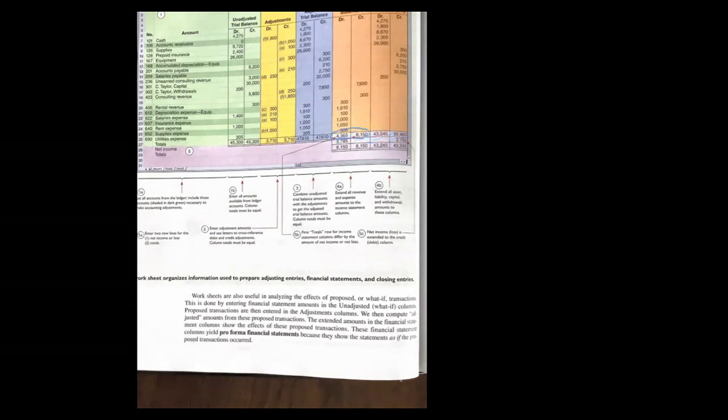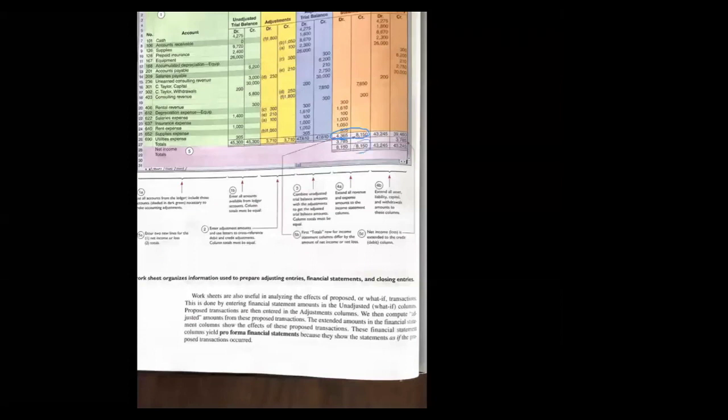The total of the debits in the income statement is 4,365; the total credits are 8,150. Which is the bigger number? 8,150. That's what I want to end with — the larger number. So I have to add 3,785 to get to that larger number. Now if you look at the balance sheet, you have the two totals.